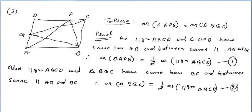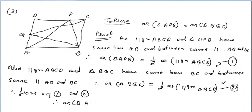From equations 1 and 2, the right-hand sides are equal. Therefore the left-hand sides are also equal: area of triangle APB equals area of triangle BQC. Hence proved.